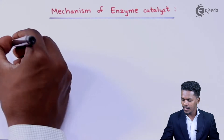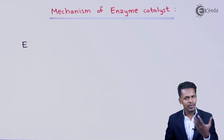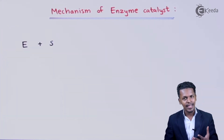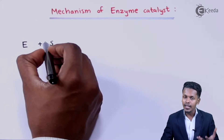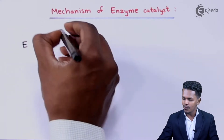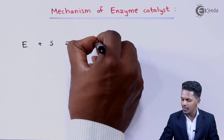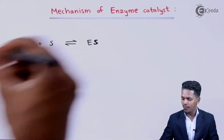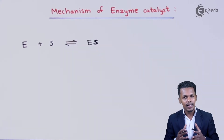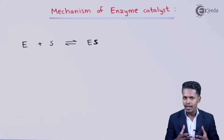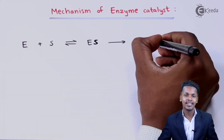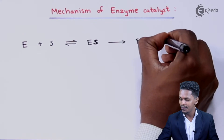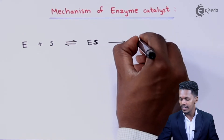For example, if we consider E to be a particular enzyme — and it is very specific in nature — it will allow the substrate to attach to it. The enzyme consists of an active site, so the enzyme will bind with the substrate so as to form a complex, represented as ES. Because of this complex, the reaction occurs and we get a particular product, while the enzyme is retrieved after the reaction.